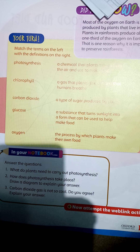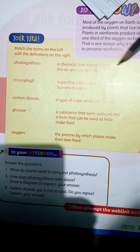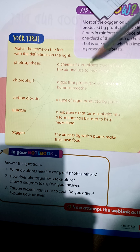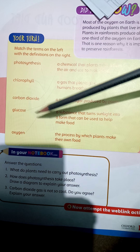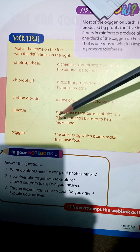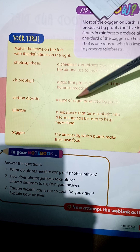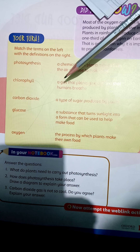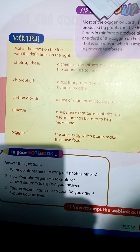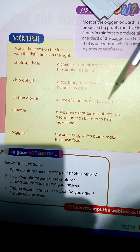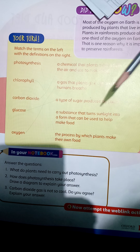Carbon dioxide is a chemical that plants take in from the air and use to make food. Glucose is the plant's by-product when the photosynthesis process is completed, and humans use it as a form of food. Oxygen is released during photosynthesis and can also be used to make food.